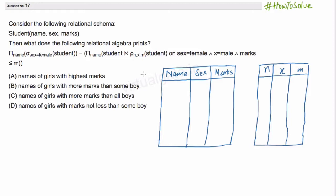Hello everyone, welcome to TechTour. In this question we have been given a relational schema student having attributes name, sex, and marks. We have been given a relational algebraic expression and we have been given the following options.